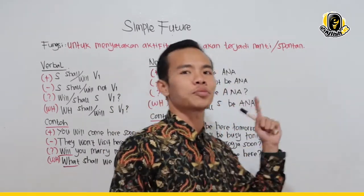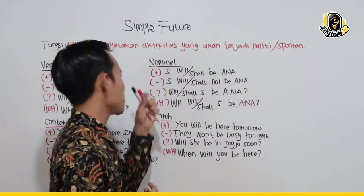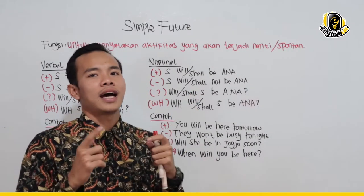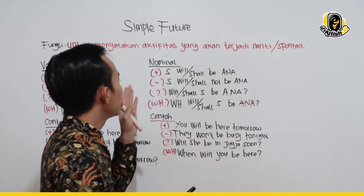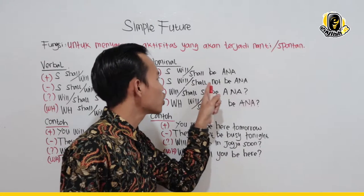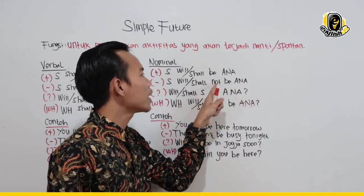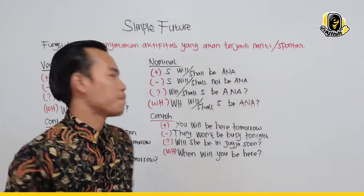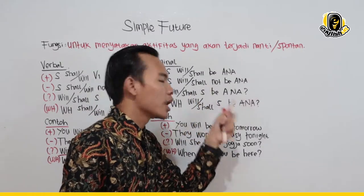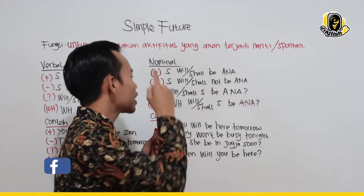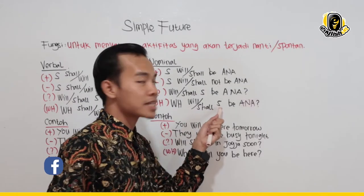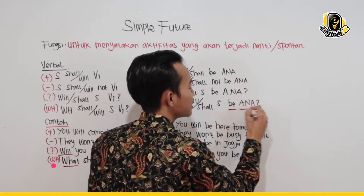Kita masuk ke yang nominal. Formulanya: Subject + will atau shall + be + ANA (adjective, noun, adverb). Negatifnya: Subject + will/shall + not + be + ANA — ingat, not dulu baru be, bukan be dulu baru not. Interogatifnya: will atau shall ditaruh di depan, lalu subject, be, kemudian ANA. WH question-nya: WH di depan, diikuti will atau shall, subject, jangan lupa be-nya, kemudian ANA.